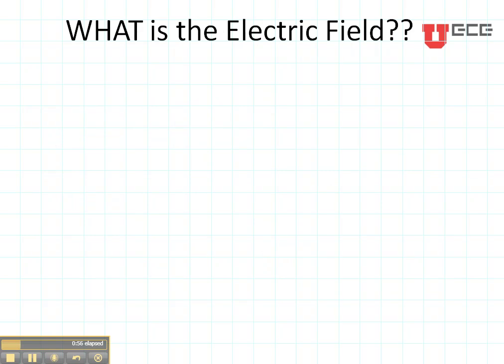So first let's talk about what is the electric field. Let's suppose that we have two charges, Q1 and Q2. They're separated by a distance R that's given here, and they're embedded in a material that has a permittivity of epsilon.